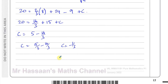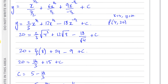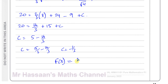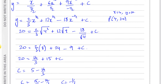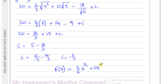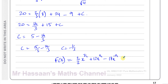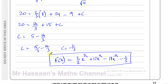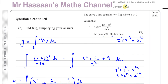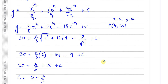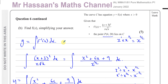So our final equation is f of x equals 2 thirds x to the power of 3 over 2, plus 12x to the power of a half, minus 18x to the power of negative a half, minus 1 third. That is our answer to part B of question 6 from the January 2022 Pure Mathematics P1 paper. Other questions from this paper and integration questions from P1 can be found in the links shown, and you can subscribe to my channel by clicking the link. Thank you for watching and see you soon.